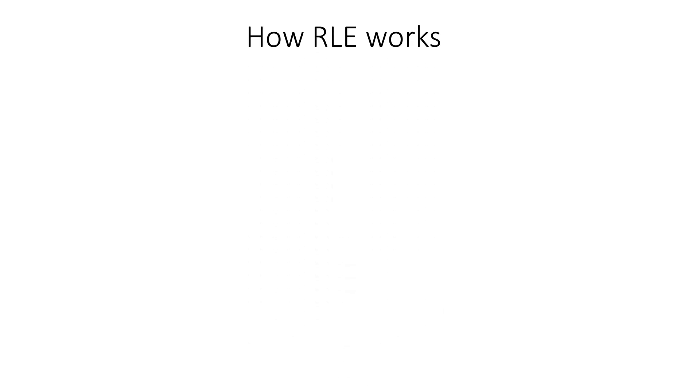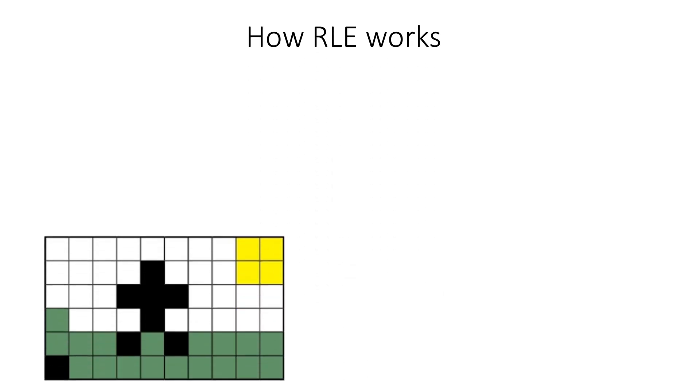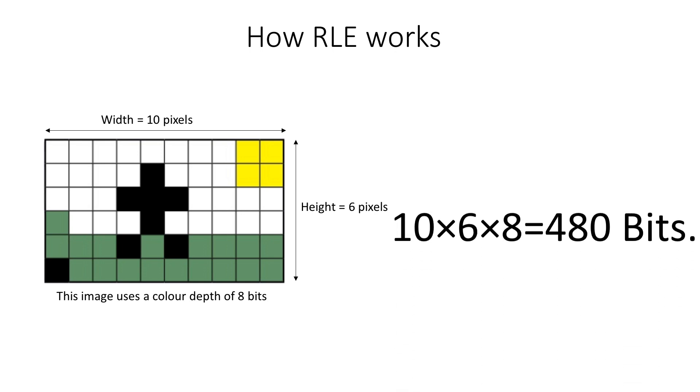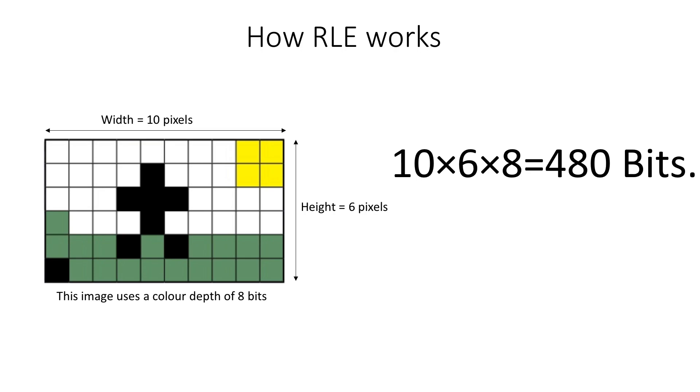So how does RLE work? If you look at this image, the width is 10 pixels and the height is 6 pixels. If we assume that this image uses a color depth of 8 bits, you have 10 times 6 times 8 equals 480 bits you need to actually store this image.